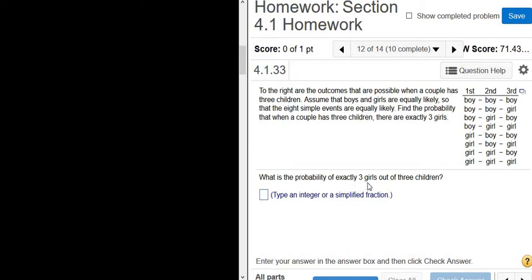We want the probability of exactly three girls. So exactly three girls is basically all girls—we want them all to be girls.